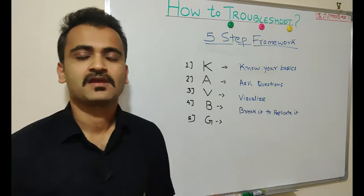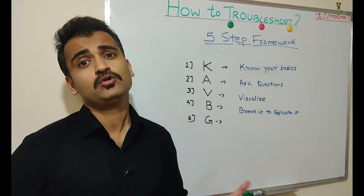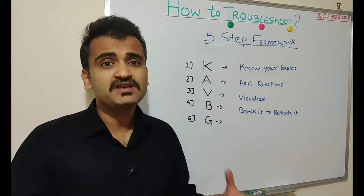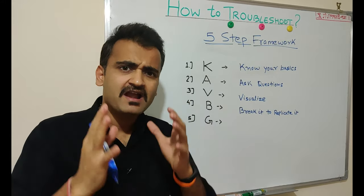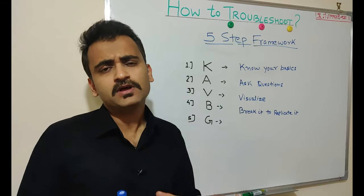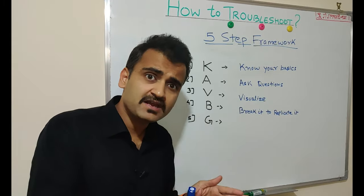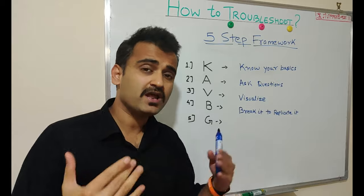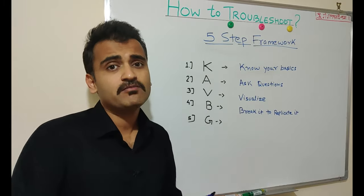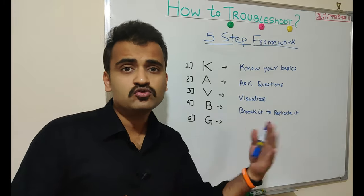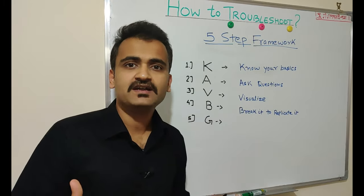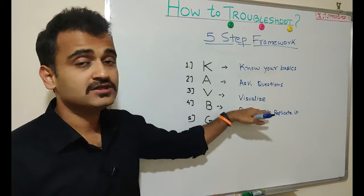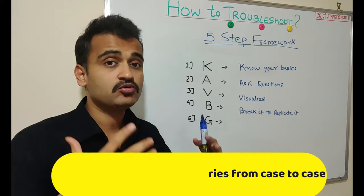Step four is: break it to replicate it. Once you understand the whole flow, you start breaking it into small pieces — try to understand one piece, then another, and funnel out all the possible scenarios. Once you start breaking down the problem you can narrow down to a specific area. By replicating it, I mean you should try to reproduce that particular issue yourself in your own environment. Maybe a customer told you something, but it's much better if you can replicate it in front of you. That can only happen once you do the first three steps correctly.